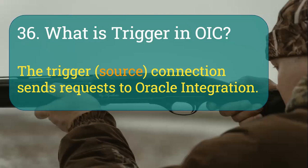When you're building an integration, at the initial stage you need to drag this Oracle trigger connection into the integration and configure it so that whenever an order is created or updated in Fusion, Fusion can trigger or send a request to our OIC integration using this trigger connection. The trigger receives that request from Fusion and sends it to Oracle integration. Trigger is a source connection, and we can have only one trigger per integration.